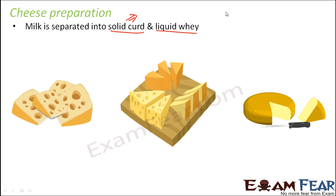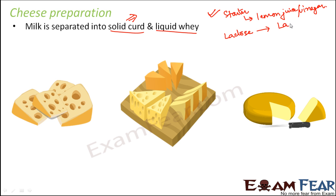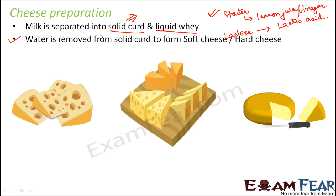The starter used here can be a bit of lemon juice or a bit of vinegar. During this process, lactose gets converted into lactic acid, which lowers the pH, causes coagulation of proteins, and gives a sour taste to the curd. To prepare cheese, we do not need the liquid whey, so water is removed from the solid curd to form either soft cheese or hard cheese.